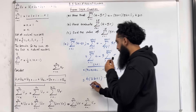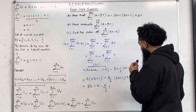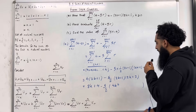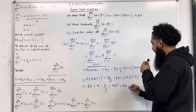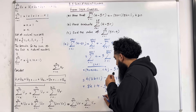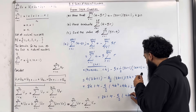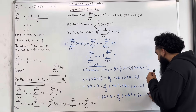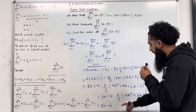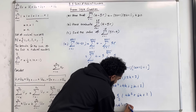Expanding the bracket 4 times 2K plus 1 gives 8K plus 4. Then minus 5 over 2 — expanding the double bracket: 2K times 2K is 4K squared, 2K times 2 is 4K, 1 times 2K is 2K, and 1 times 2 is 2. Further simplifying: 8K plus 4 minus 5 over 2 times 4K squared plus 6K plus 2. Expanding gives minus 10K squared minus 15K minus 5.